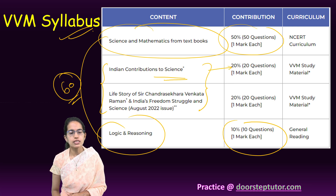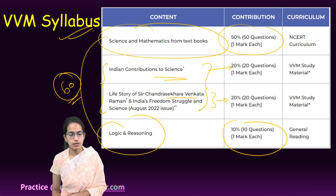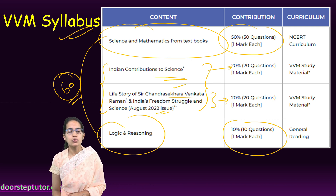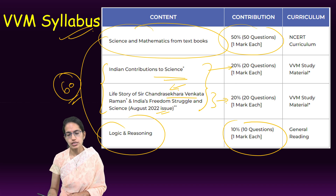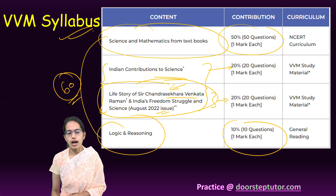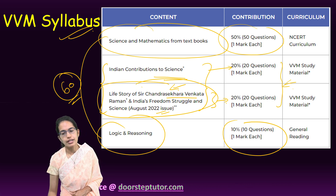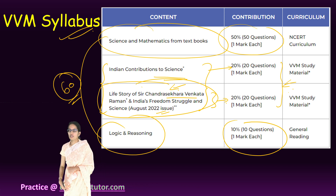There are 20 questions on India's contribution to science, and the story of one great scientist from India for 20 marks. For 2023, this was C.V. Raman — this changes every year. You have to read the life story of a scientist from India, and this material would be provided by VVM itself.